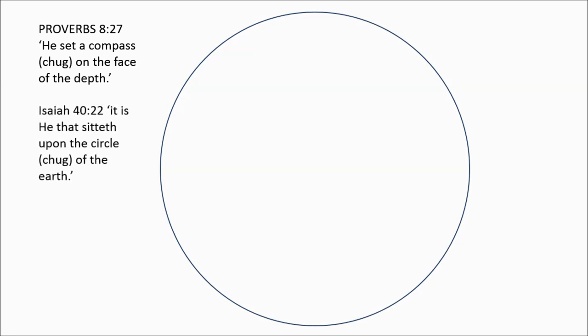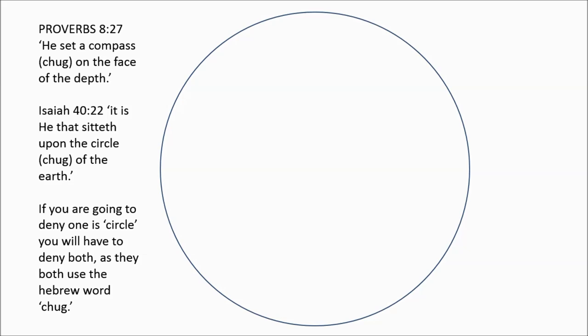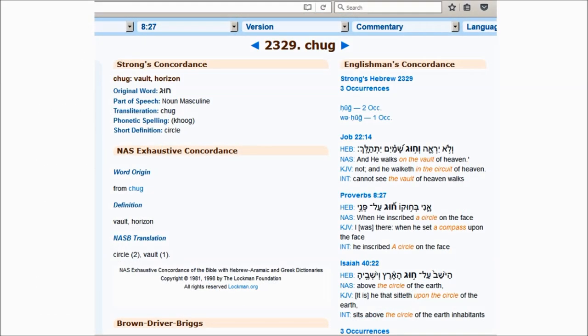Everybody knows the famous Isaiah 40:22 verse which says he sits upon the circle of the earth. It uses the same Hebrew word as Proverbs 8:27. It's exactly the same Hebrew word. So if you're going to accept one is circle, you definitely need to accept the other is circle. Although the King James translators use a different English word, the actual Hebrew word, as we can see from the Strong's Concordance, is the same. It's chug.